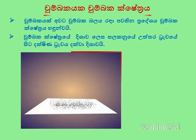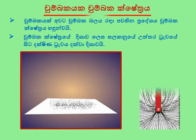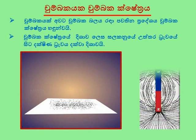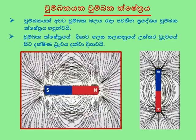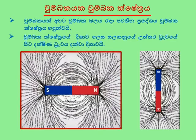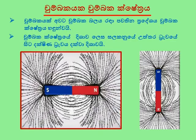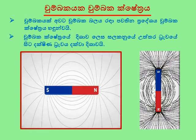In such a field, we can use iron fillings. When a magnet is placed on a piece of paper and the paper is gently tapped, the iron fillings are arranged in a particular manner. Such a pattern of arrangement shows the magnetic lines of force.